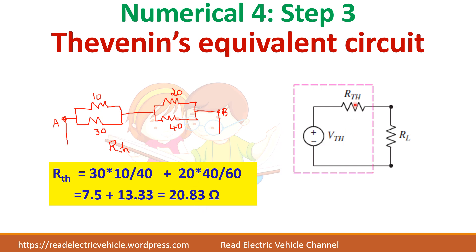So this is the equivalent circuit. We got Vth already. Rth is 20 ohms and you just mark RL. So this is the Thevenin equivalent circuit.